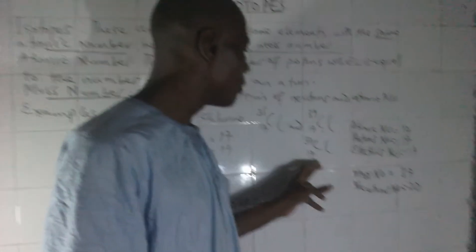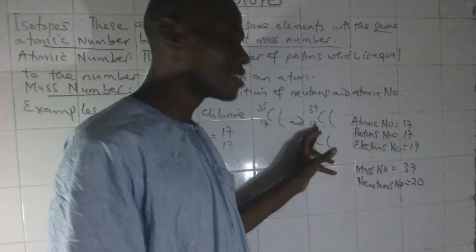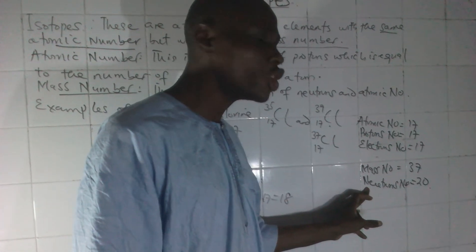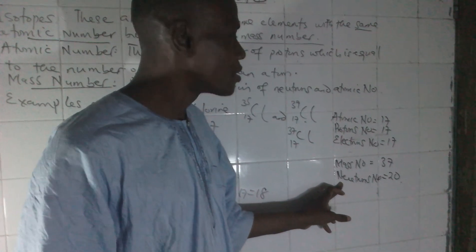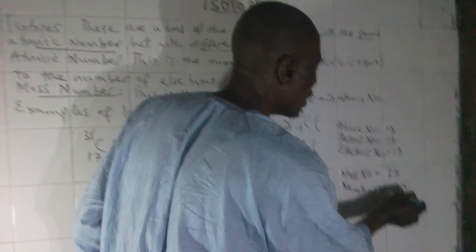Chlorine 37. Atomic number here is 17. Protons is 17. Electrons is 17. Mass number is 37. What is going to be the number of neutrons? You subtract 37 take away 17. Neutrons here is 20.